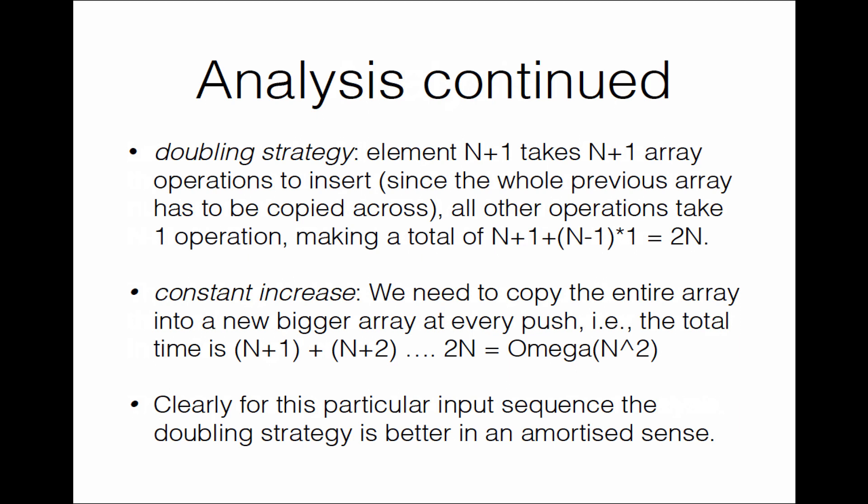For the doubling strategy, when element n+1 is pushed into the stack, we need n+1 array operations, since the entire previous array has to be copied across and then one new element added. All other push operations take simply one array operation, since there is space in the new increased array for all of them. This makes a total of n+1 for the first operation and 1 for each of the remaining n-1 operations — that is simply 2n operations in total.